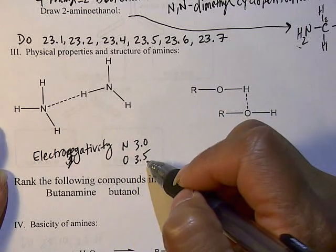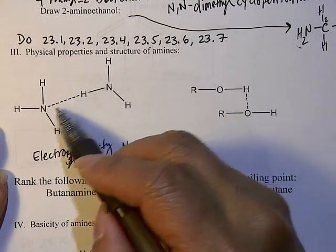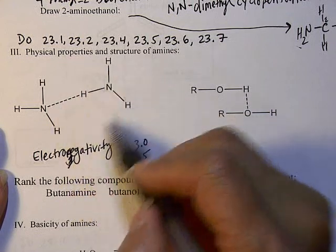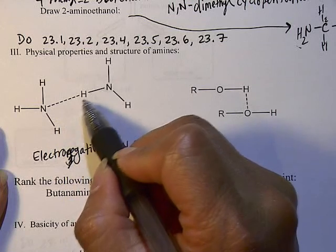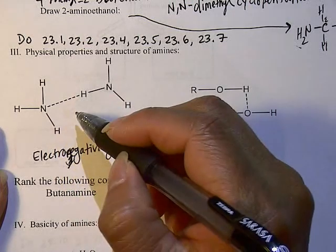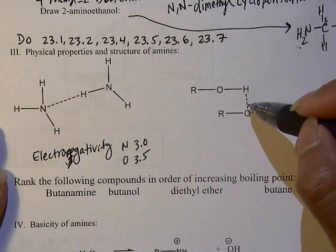So oxygen is more electronegative than nitrogen. So when it hydrogen bonds as shown here, I've deliberately drew the hydrogen bonding to be longer than hydrogen bonding with an oxygen.